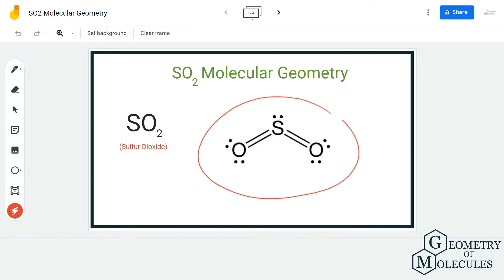This is the Lewis structure of SO2, with the sulfur atom forming double bonds with two oxygen atoms. Apart from that, there is a lone pair of electrons on the sulfur atom.